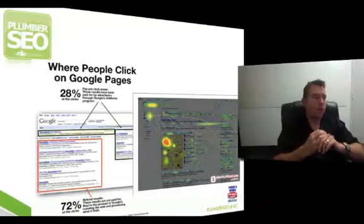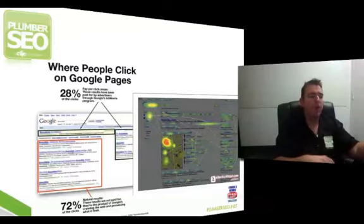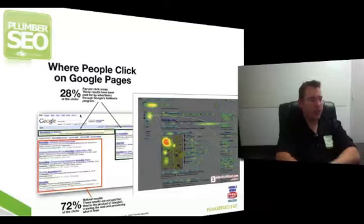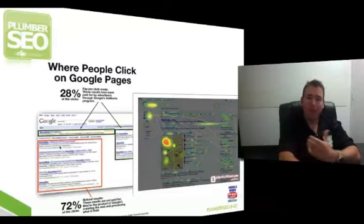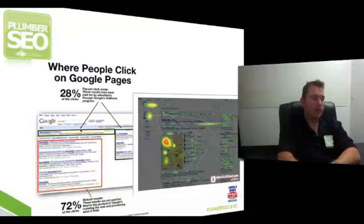I like to answer that with data. There were some studies conducted to see what people looked at when they search. When someone types in your city plus plumber or your city plus plumbing, where do they look? Do they look at the organic section or the pay-per-click listings? For the most part, more than 72% of the population, when they run a search, their eyes go straight to the organic section and the map, and kind of skim right past the pay-per-click listings.